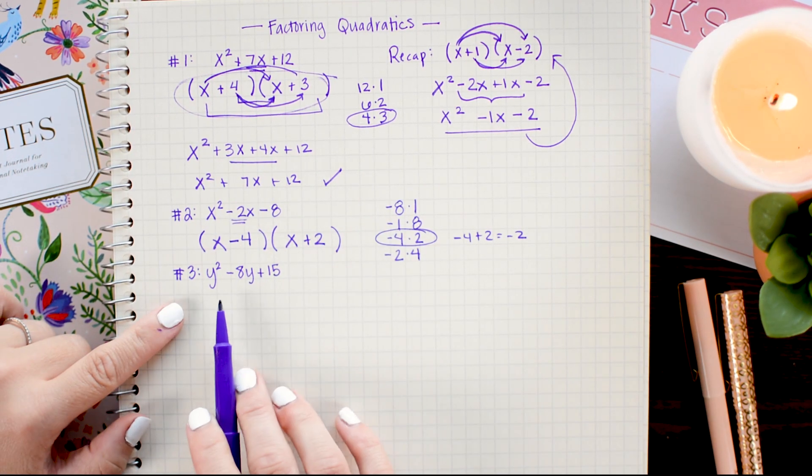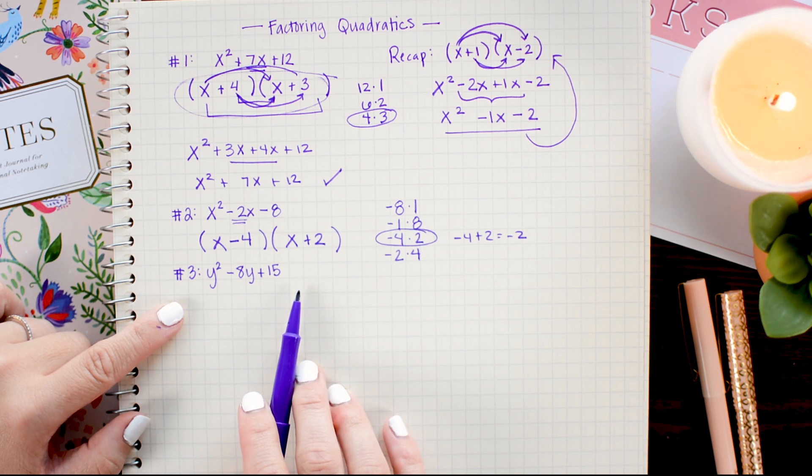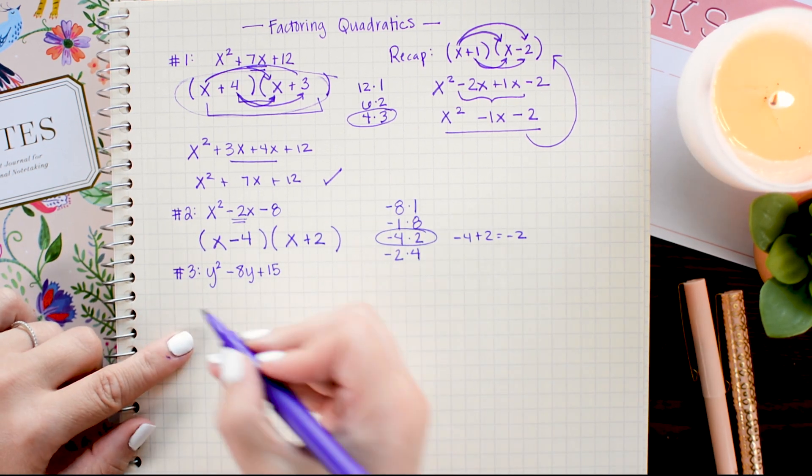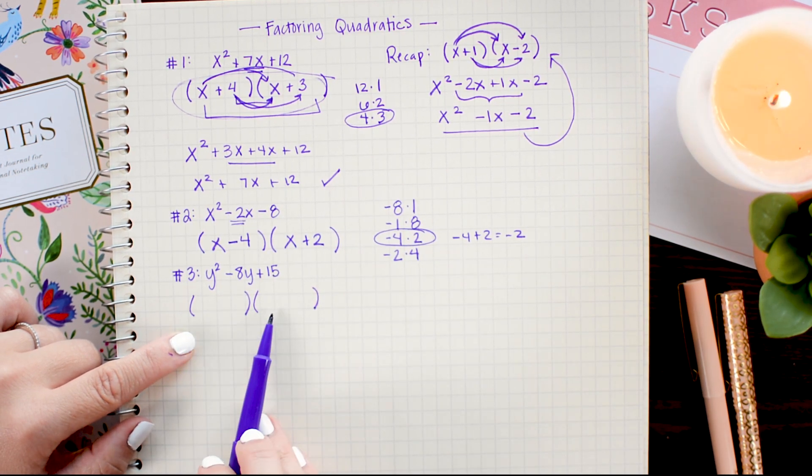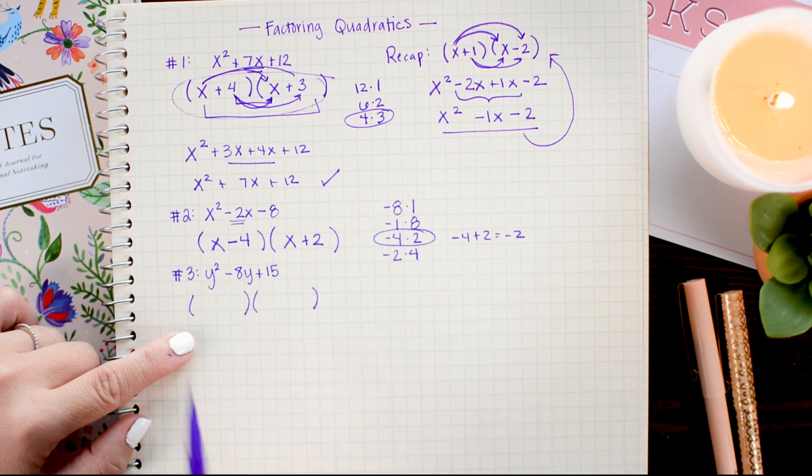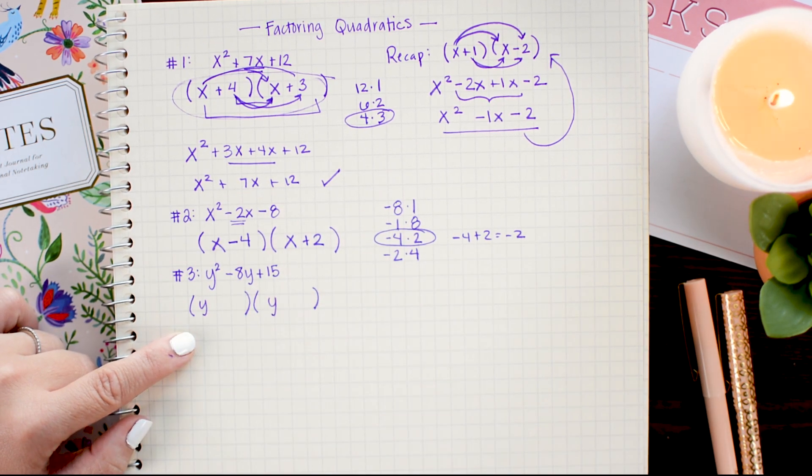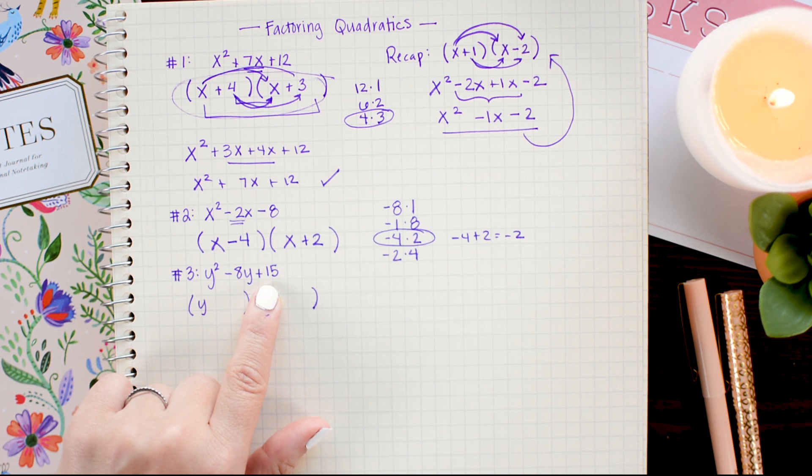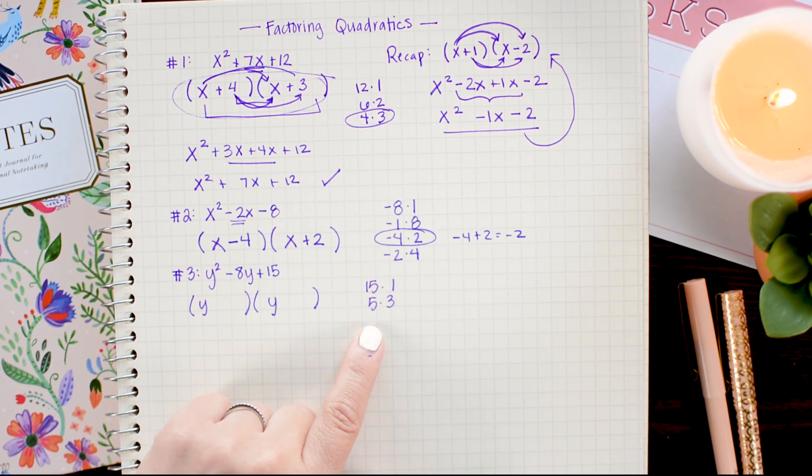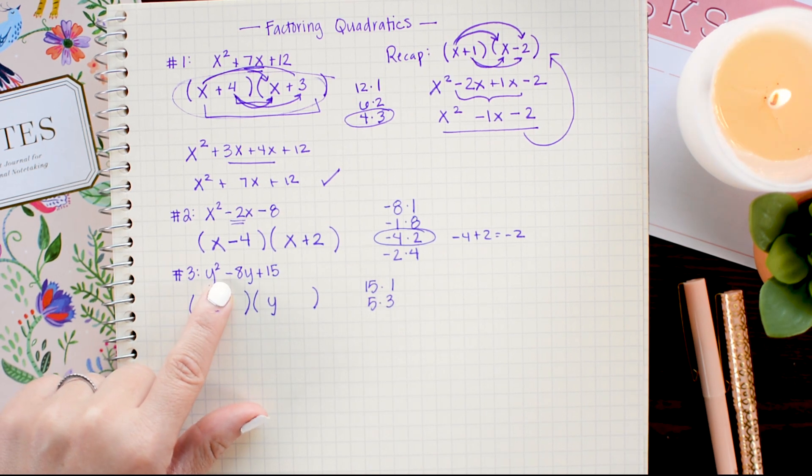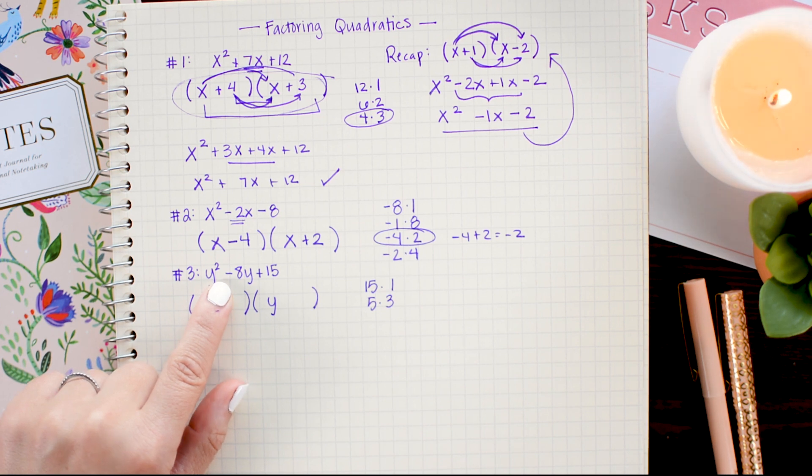Although I have different letters in this problem, it still works the same. I'm going to draw my parentheses. I'm going to place a y as the first term instead of an x since I'm working with y's. And I'm going to look for factors of 15 that combine to negative 8. Now notice here, I just wrote down the positive factors. But because I want to combine to a negative number, I will want to add the negative times negative factors.